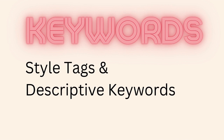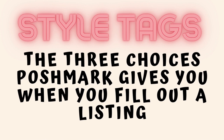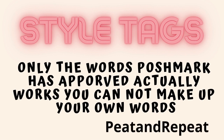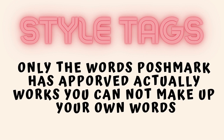There are two different types of keywords: style tags on Poshmark and Mercari — and possibly Depop — and then descriptive keywords. Style tags are the three choices that Poshmark gives you when you fill out your listing. What you may not know is that you cannot make up your own style tags. You have to choose from words Poshmark has preset; if a word doesn't come up when you type it in, it's not one of their choices. Jonna Ogden, who is Pete and Repeat on Poshmark, has a list of all accepted words in her closet.